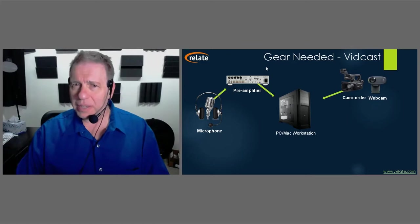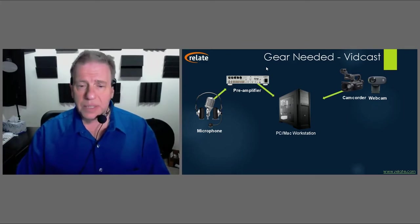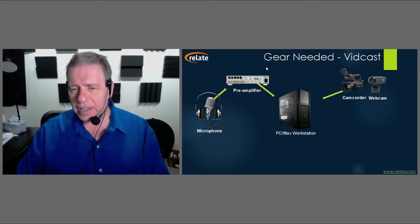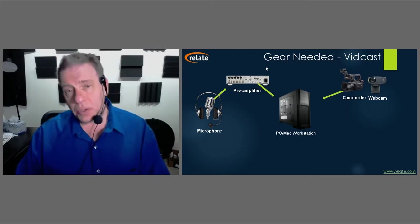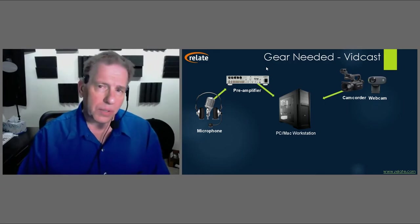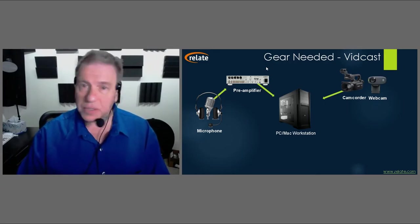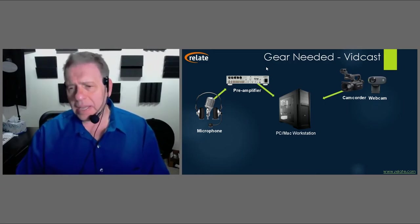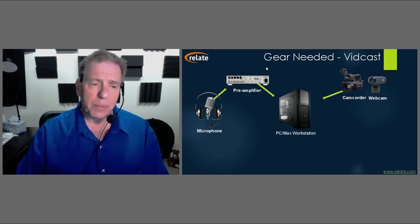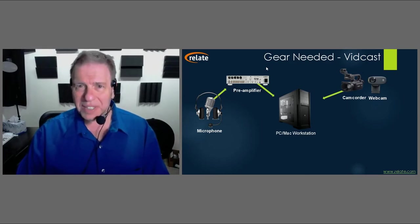If you're paying attention, you're probably thinking this is going to get expensive — and it could. A really good PC will cost you somewhere between $2,000 and $8,000. A Mac will cost you probably about $3,500 for a really fast iMac, or a MacBook Pro for about $2,500 to $3,000. Video capture cards run $500 to $1,000, microphones $200 up to $1,000, and preamplifiers $200 up to about $1,000. You can add up a lot of money on video broadcasting.